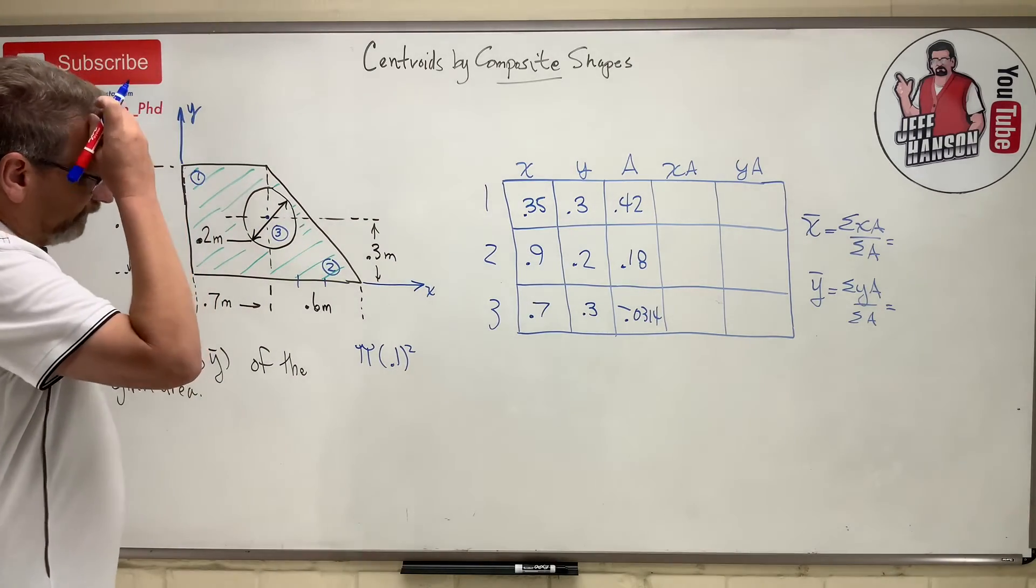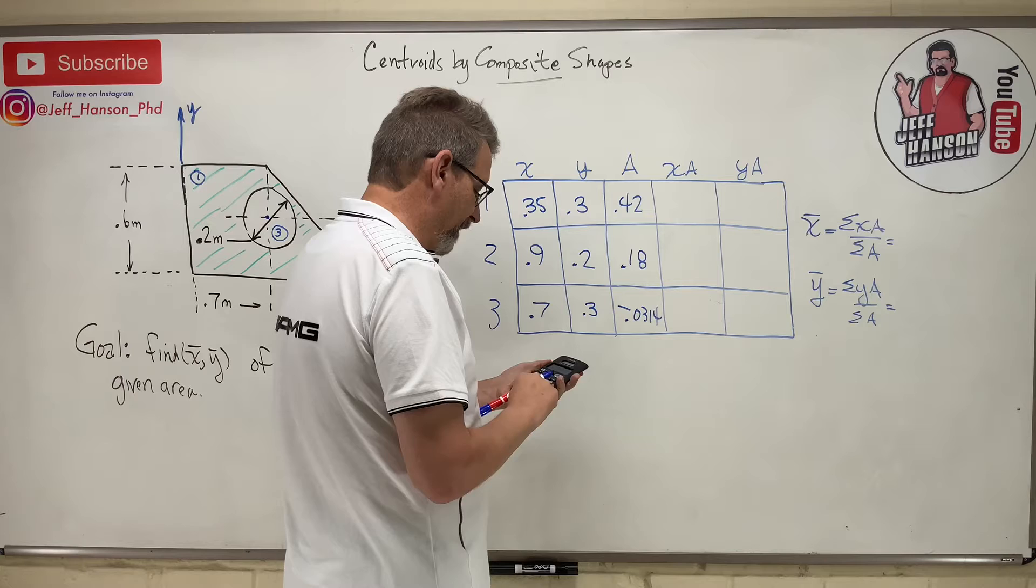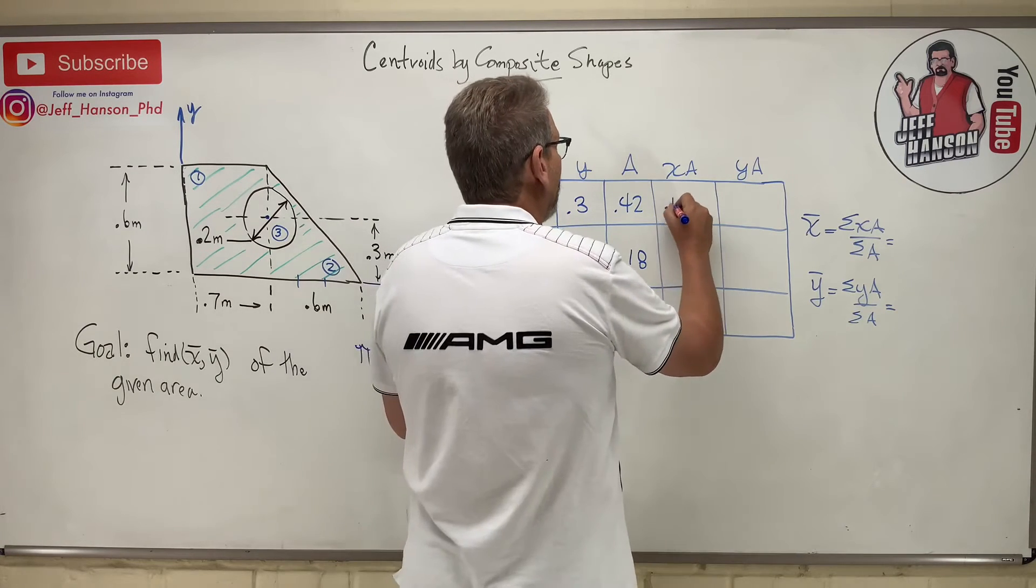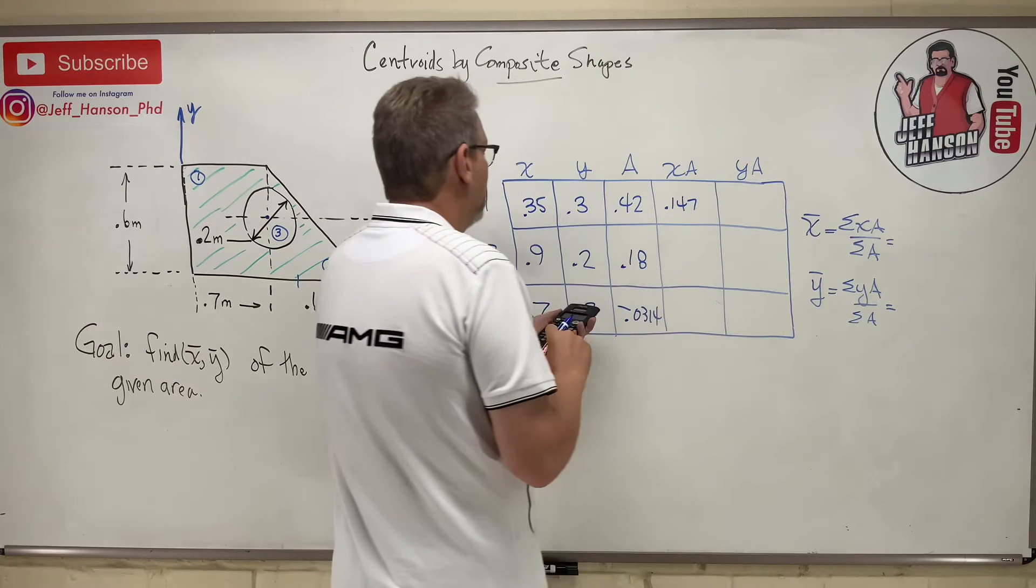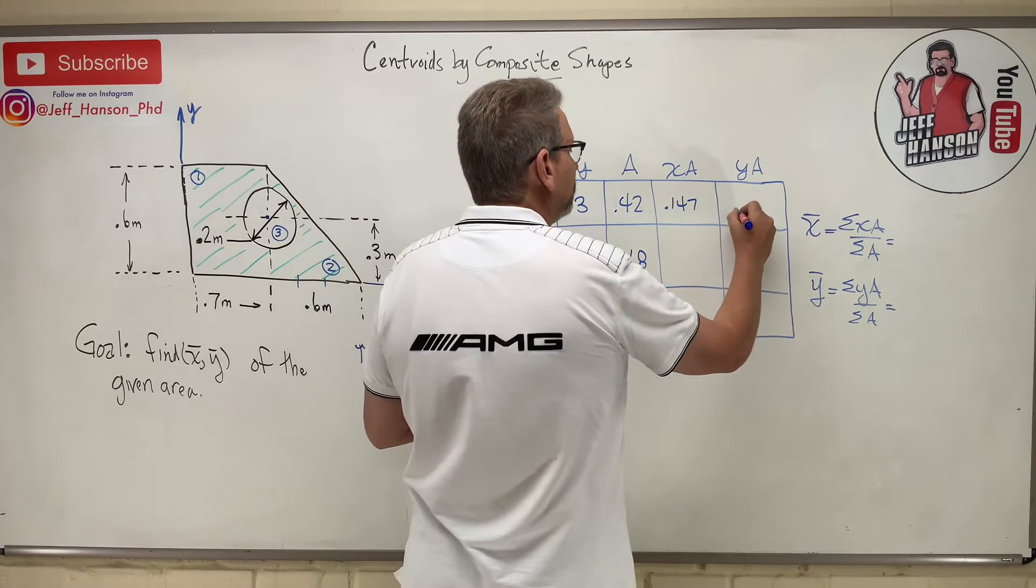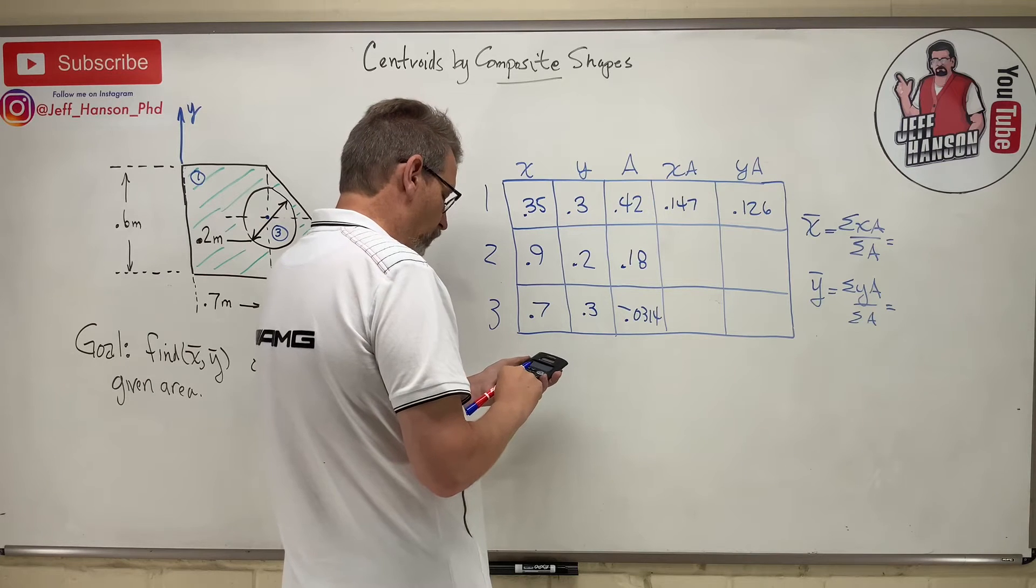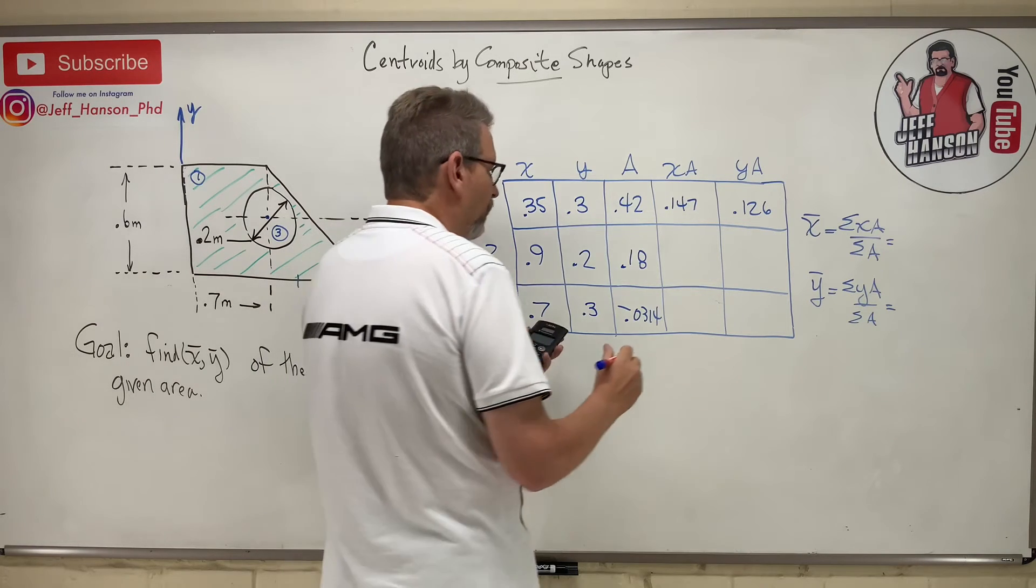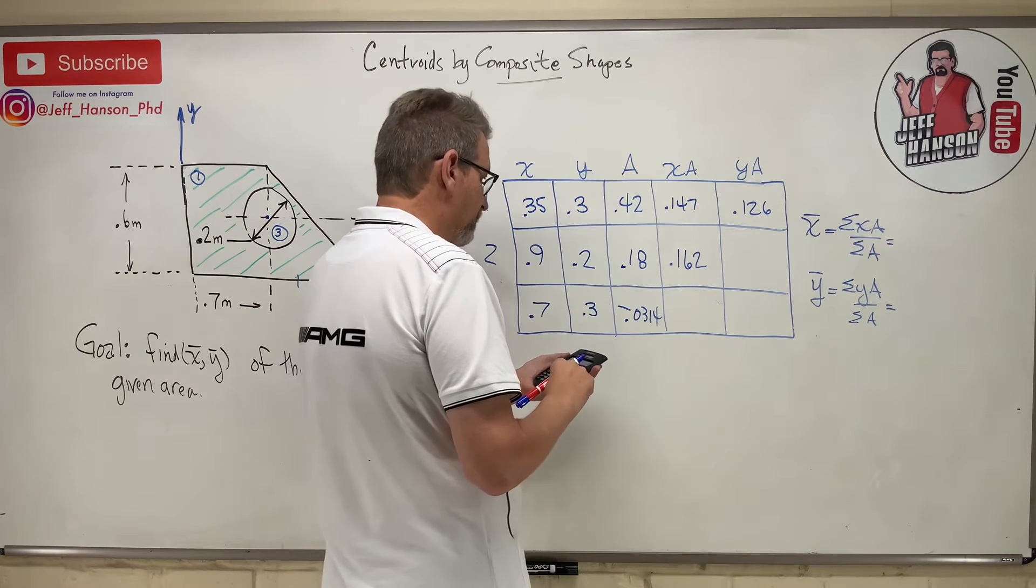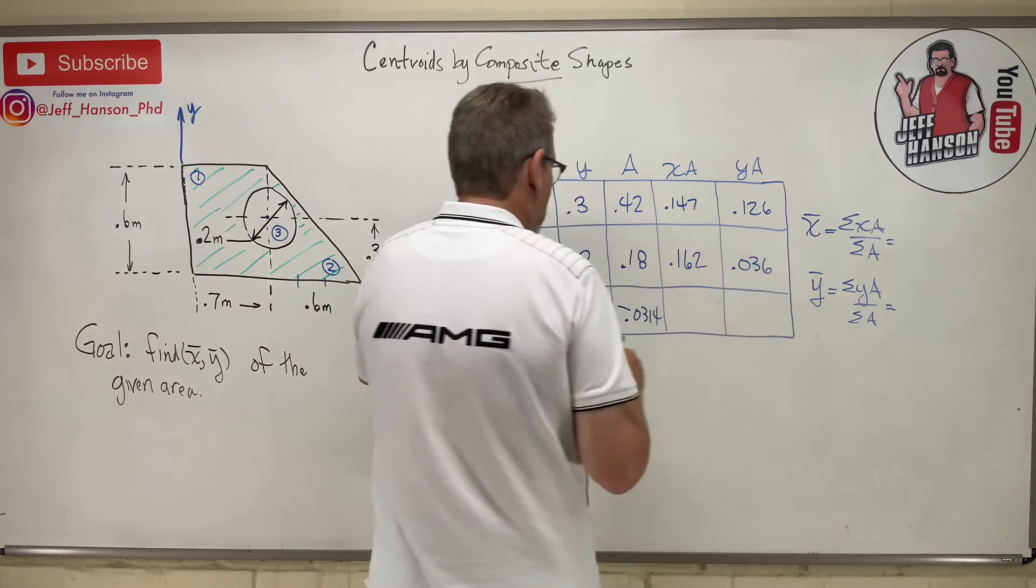And those are in meters, so this is a little number there, isn't it? So now all we have to do is just multiply the rest of our table out. So 0.35 times 0.42 equals - that's 0.147. And then 0.3 times 0.42 - 0.126. And then 0.9 times 0.18 is 0.162. And then 0.2 times 0.18 is 0.036.